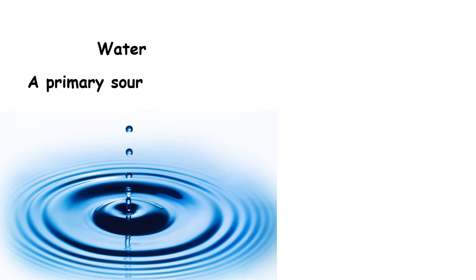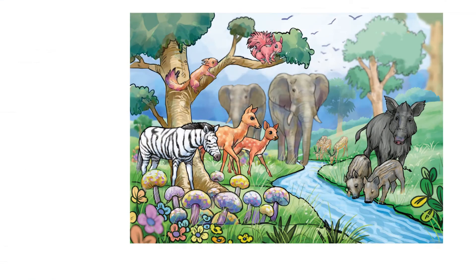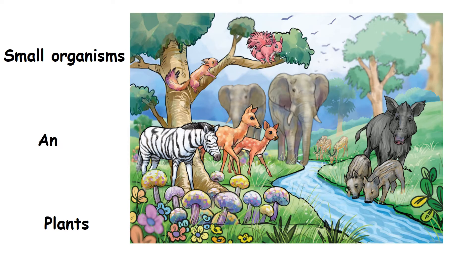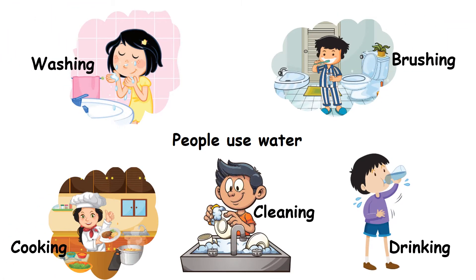Water — a primary source of life. Water is one of the most important resources on earth. All living things, like small organisms, plants, and animals, need water to survive. People use water for various purposes.